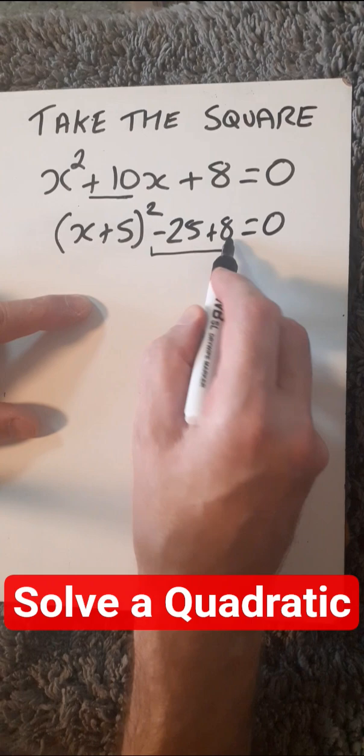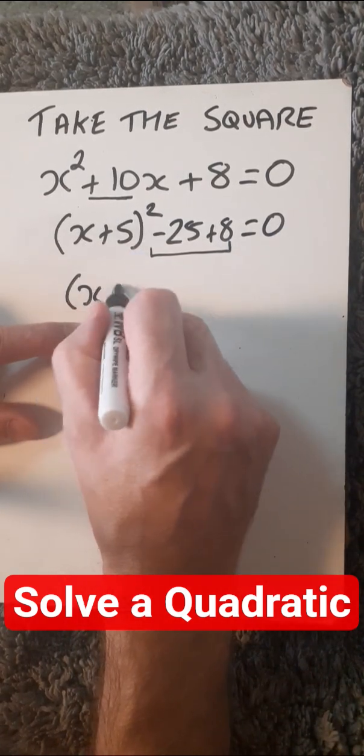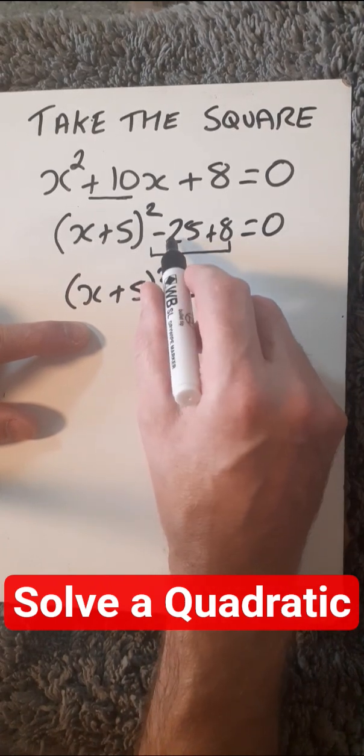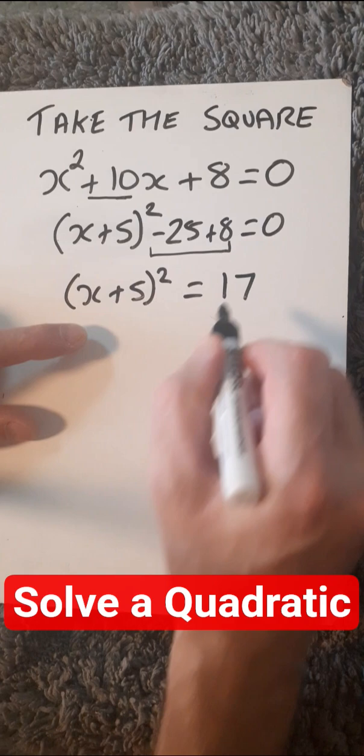So, now we've got to get these numbers here over to the right hand side and keep this. So, now we've got x plus 5 squared equals minus 25 plus 8 is minus 17, but bring it to this side, we get positive 17.